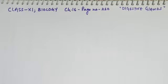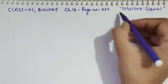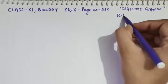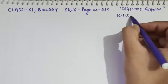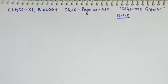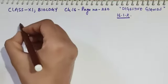That is section 16.1.2. So, digestive glands. Digestive glands are associated with the alimentary canal.